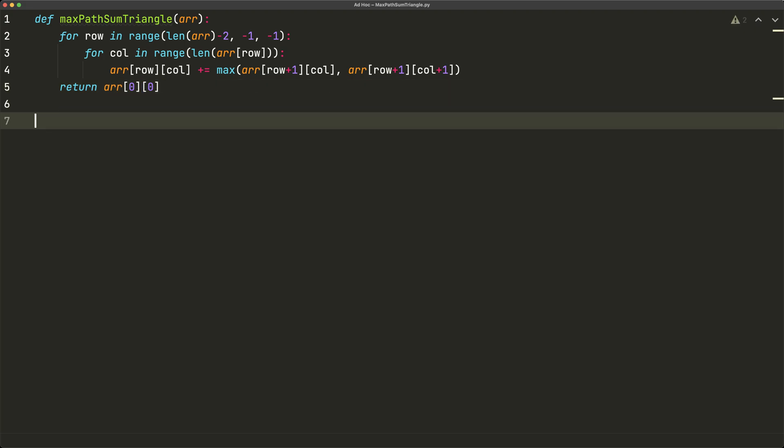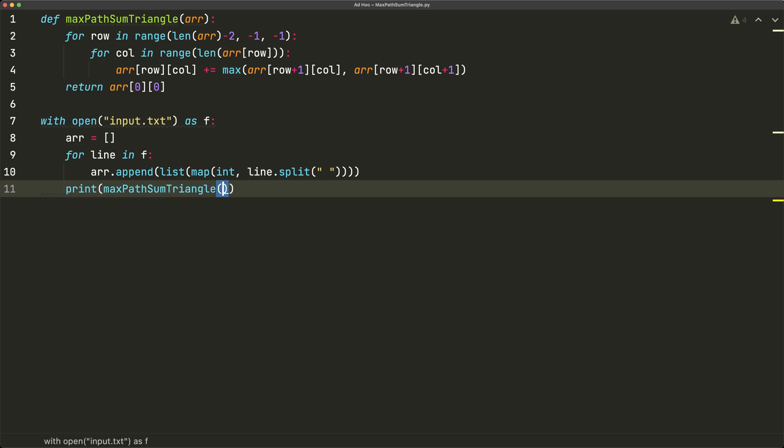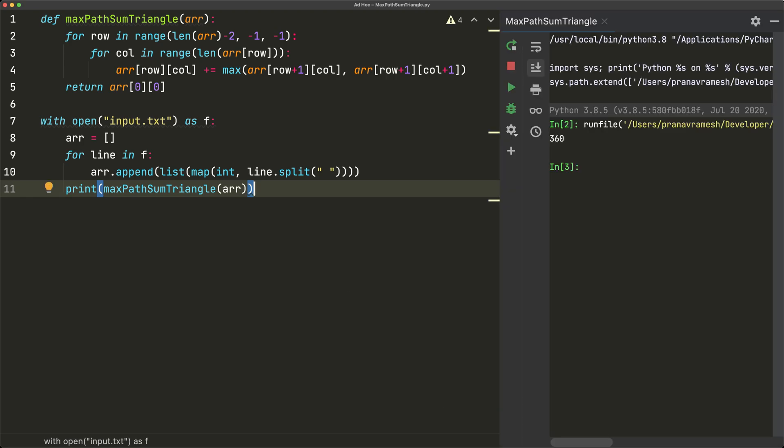So let's go ahead and test this code. So we'll say with open input.txt as f, f is our file, and we'll create a new array, array is equal to blank array. And we're just going to add all the contents of input.txt into the array. So for line in f, we'll say r.append list map. So we'll convert everything to an int. And the things that we're converting are going to be from line.split at space. And once we have this, we can just print the maximum path sum of r. And we run this and we see that we get 360 as our answer.